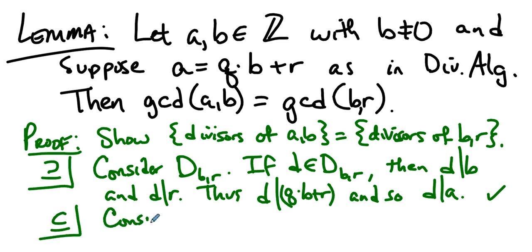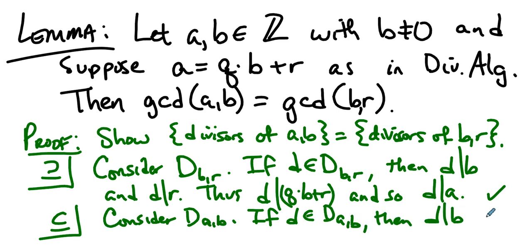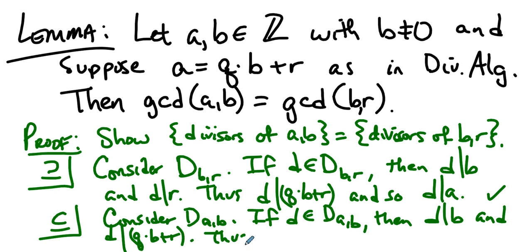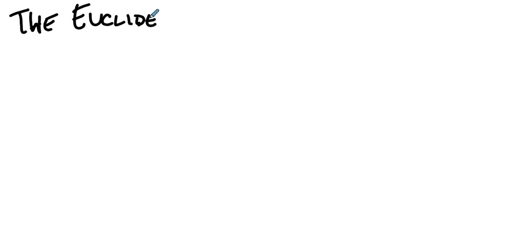Now go the other way. Consider the set of divisors of a and b. If a number d is a divisor of a and b, then d divides b and d divides a. If d divides this sum and d divides b, then d has to divide r as needed. So the divisors of b and r are the same as the divisors of a and b, and therefore the greatest common divisor of a and b is the greatest common divisor of b and r. That establishes the lemma.